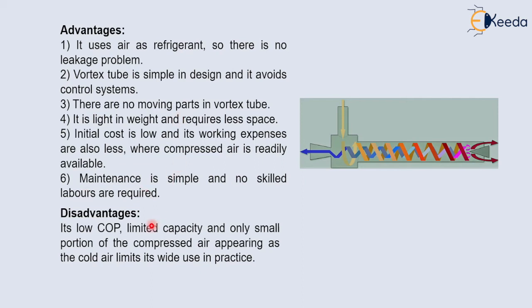The disadvantages of the vortex tube refrigeration system are: it has low COP; it has limited capacity, meaning it can only be used for small capacity plants; only a small portion of the compressed air appears as cold air, which limits its wide use in practice; and the cold compressed air coming from the cold side has limited applications.